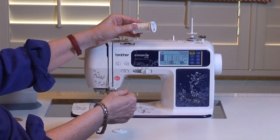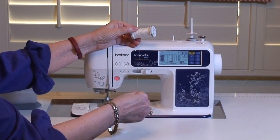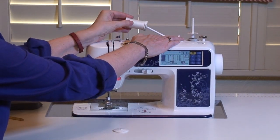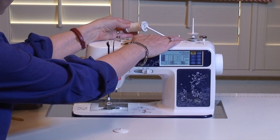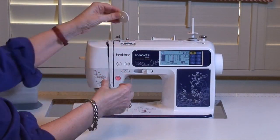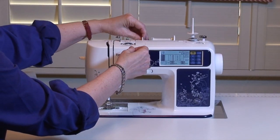So on this machine, it wants the thread to come off the back of the spool. So we're just going to lift the spool pin, slide it on, see if I can do it from this angle. Put on the spool cap, make sure it's the right size for your spool.